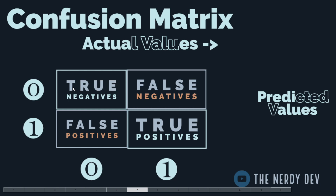The second cell represents the False Negative: the actual value was 1 (a positive class), but the model incorrectly classified it as 0. So points that were actually 1 were incorrectly predicted as 0.